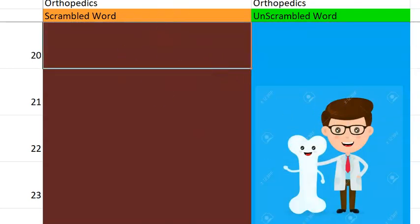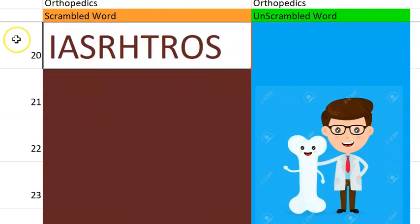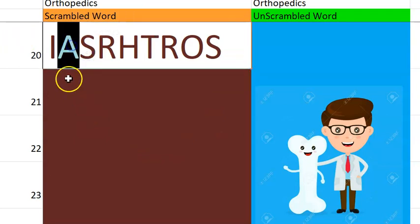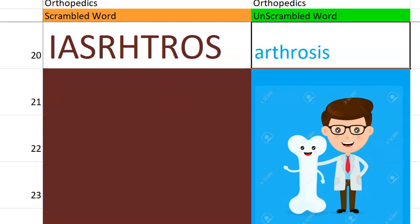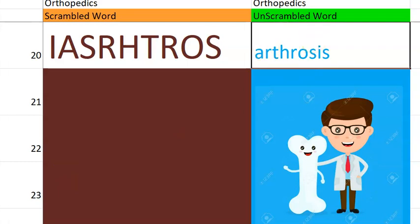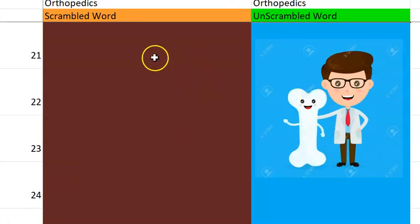Now let's go to the twentieth one. What do you think this one is? It begins with an E-R, something to do with the joint. So it is arthrosis. Arthrosis is mostly referring to a disease — basically it is a non-inflammatory degenerative condition associated with aging. If it is inflammatory, you will add -itis.